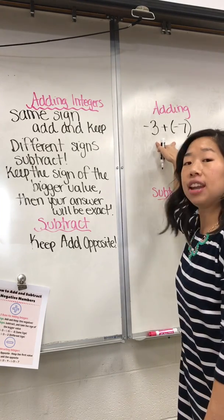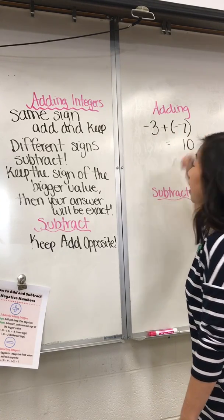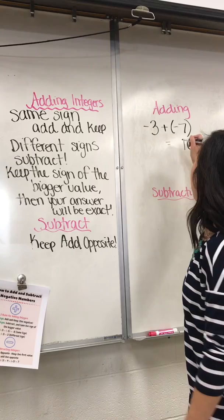Since they are both negatives, you're going to add three and seven. That will get you ten, and then you're going to keep the negative sign.